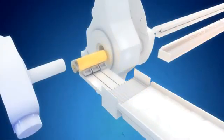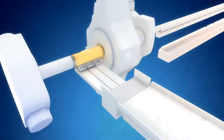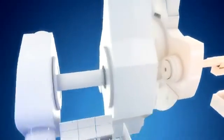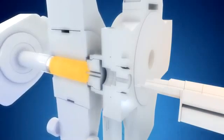A mandrel is inserted into the hole in the billet. When extrusion begins, the billet is pressed out between the die and the mandrel.